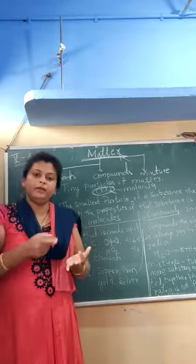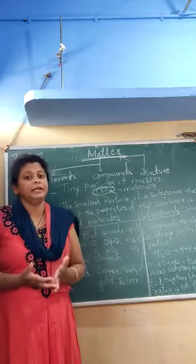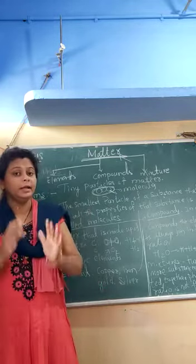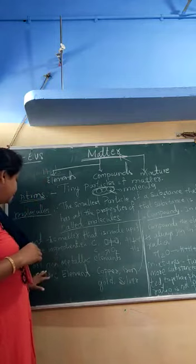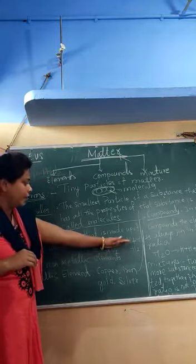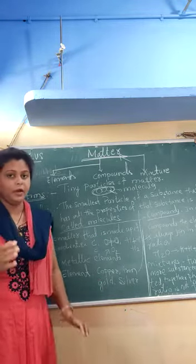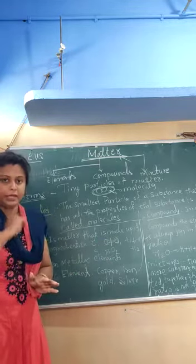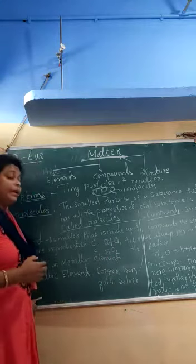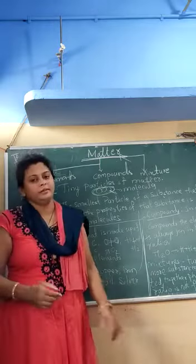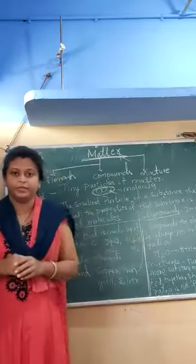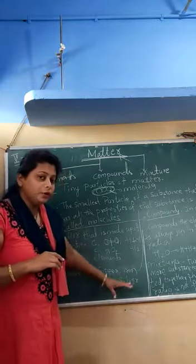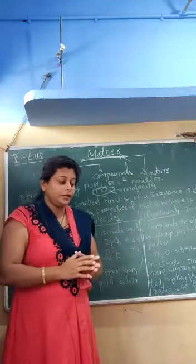Elements are of two types: metallic elements and non-metallic elements. Metallic elements are those like gold, silver, iron, and copper — these have the properties of metals. Non-metallic elements are carbon, oxygen, hydrogen, and nitrogen — these have no connection to metals at all. So copper, iron, gold, and silver are the metallic elements.